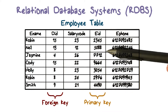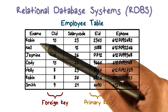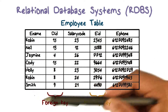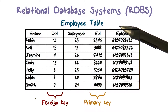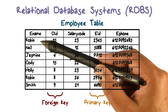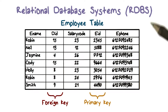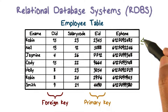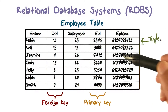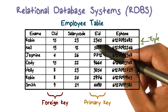Now, in this particular organization, we have a bunch of employees: Robin, Neil, Jasmine, Cody, Holly, and so on. For each of them, we're going to have a tuple. If you look at a given row in this table, that is what we are calling a tuple, and we uniquely identify those by the employee ID.